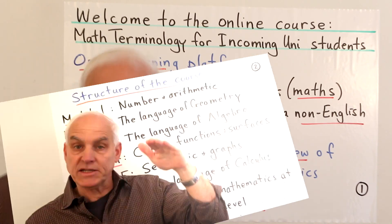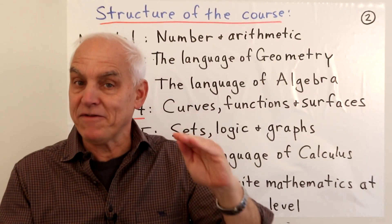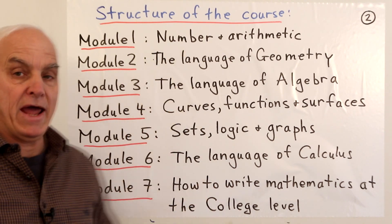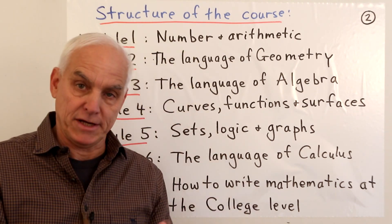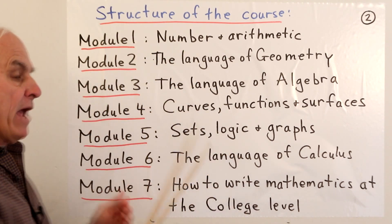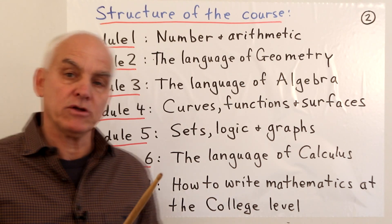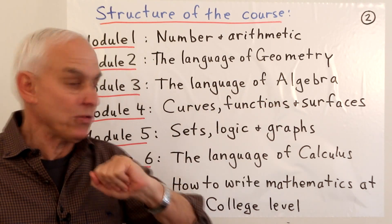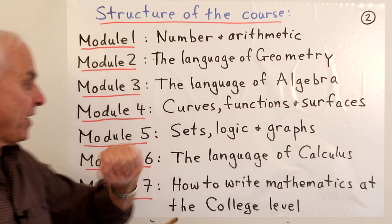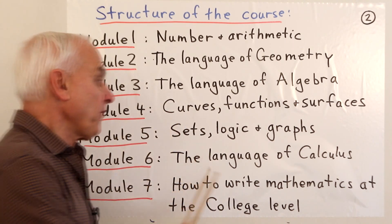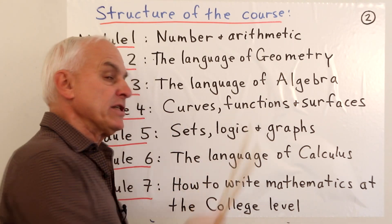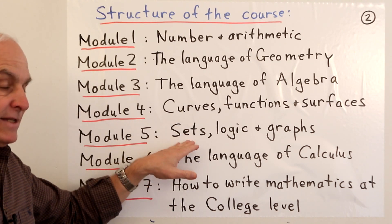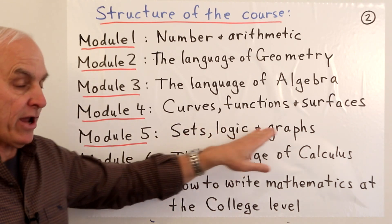The course is designed with seven modules. The first is number and arithmetic. The second is the language of geometry. The third is the language of algebra. In module four, we talk about curves, functions, and surfaces. Module five deals with sets, logic, and graphs.